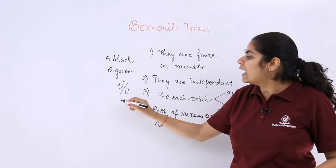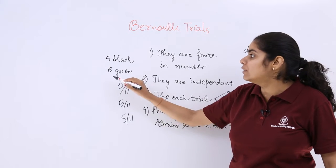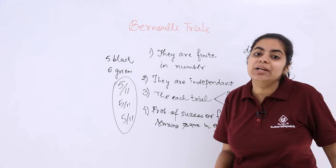Now again successively if I have to take out the second black ball and the question is that it is with replacement, again we will get 5 over 11. In the third draw also 5 over 11 because it is with replacement.